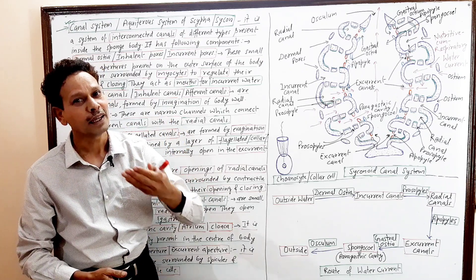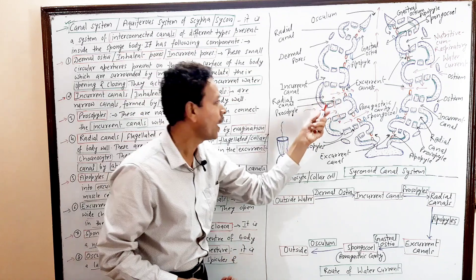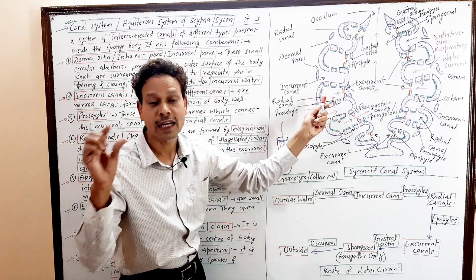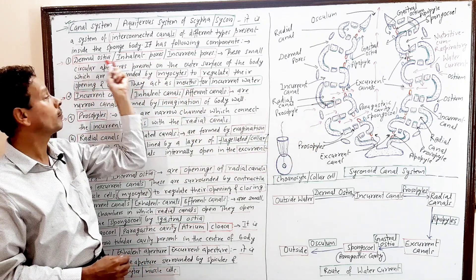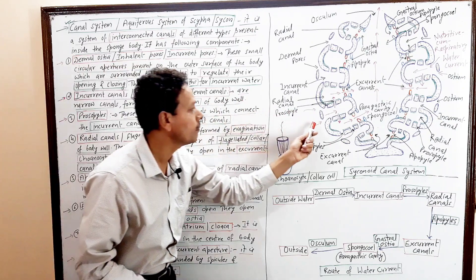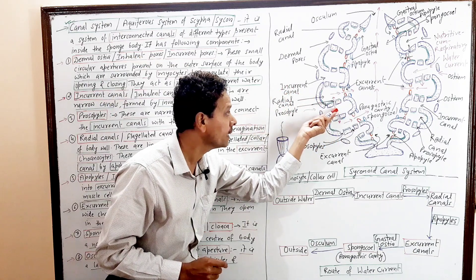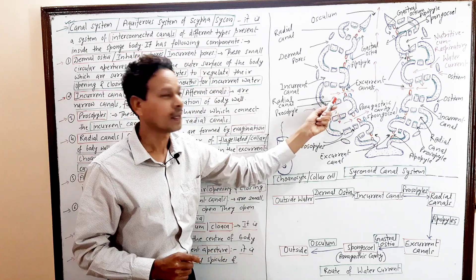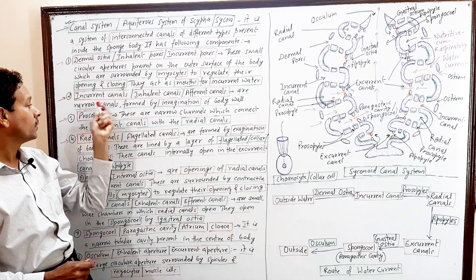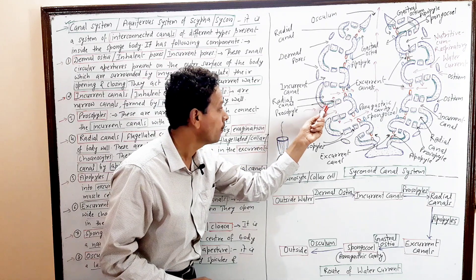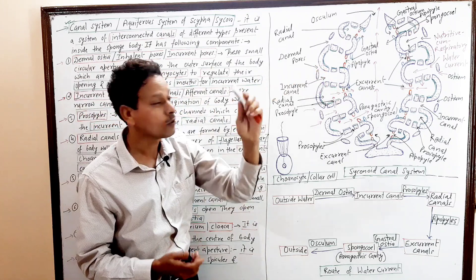These Incurrent Canals lead to other canals via very narrow apertures. These very narrow channels are called Prosopiles. So the path is: Dermal Ostia on the outer surface, then Incurrent Canals, then very narrow channels called Prosopiles. Prosopiles are very narrow channels which connect the Incurrent Canal and the Radial Canal.